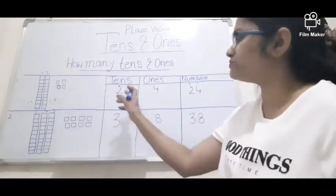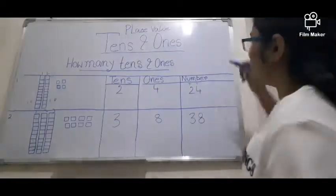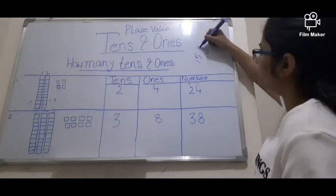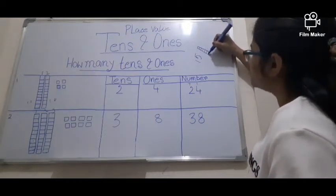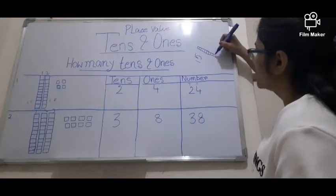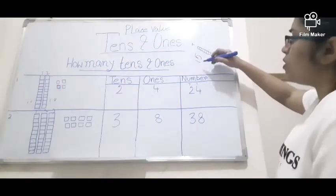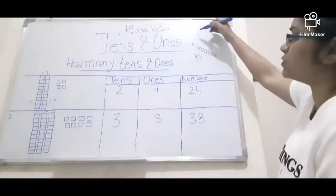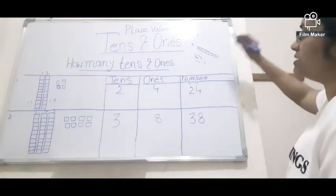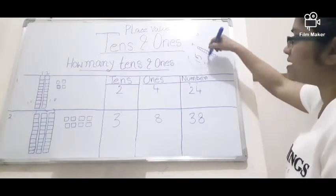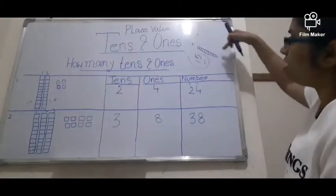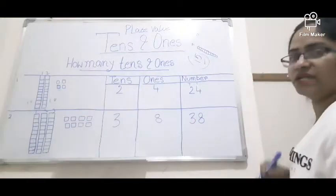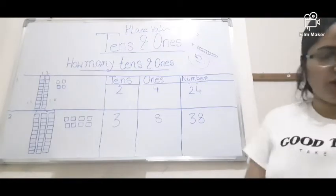Suppose here is 15. I can draw 10 blocks in one group — 1, 2, 3, 4, 5, 6, 7, 8, 9, 10. That means this is the 10s place: 1 is the 10s place and 5 is the 1s place. The number is 15 because 10 is inside this group. So I draw only 1 group of 10 blocks and separately 1 single block — that's how 15 is represented.